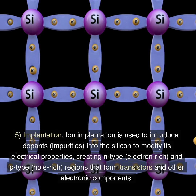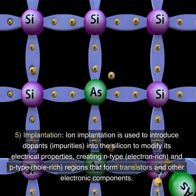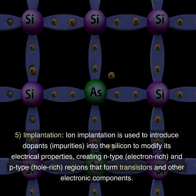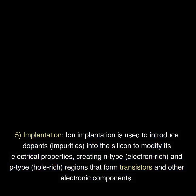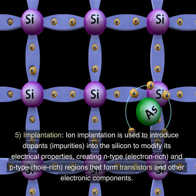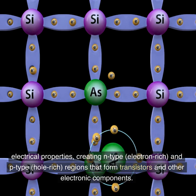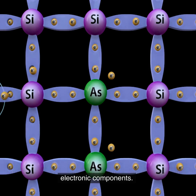Step 5: Implantation. Ion implantation is used to introduce dopants (impurities) into the silicon to modify its electrical properties, creating n-type (electron-rich) and p-type (hole-rich) regions that form transistors and other electronic components.